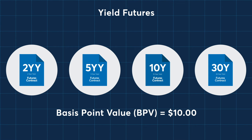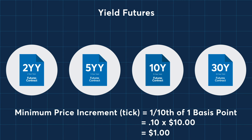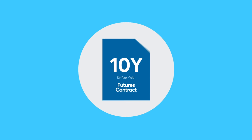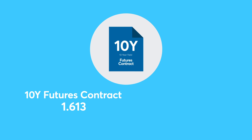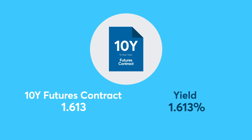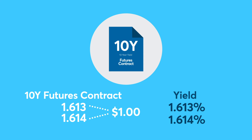Each contract has the same basis point value of $10. The minimum price increment for all these contracts is one-tenth of one basis point, which equals $1. For example, 10-year Yield Futures trading at an index level of 1.613 represents a 1.613% yield on the current 10-year on-the-run U.S. Treasury note. If the yield index value increases by one-tenth of one basis point — the minimum tick increment — to 1.614, that represents a gain to a long position of $1, or a loss of $1 to a short position.